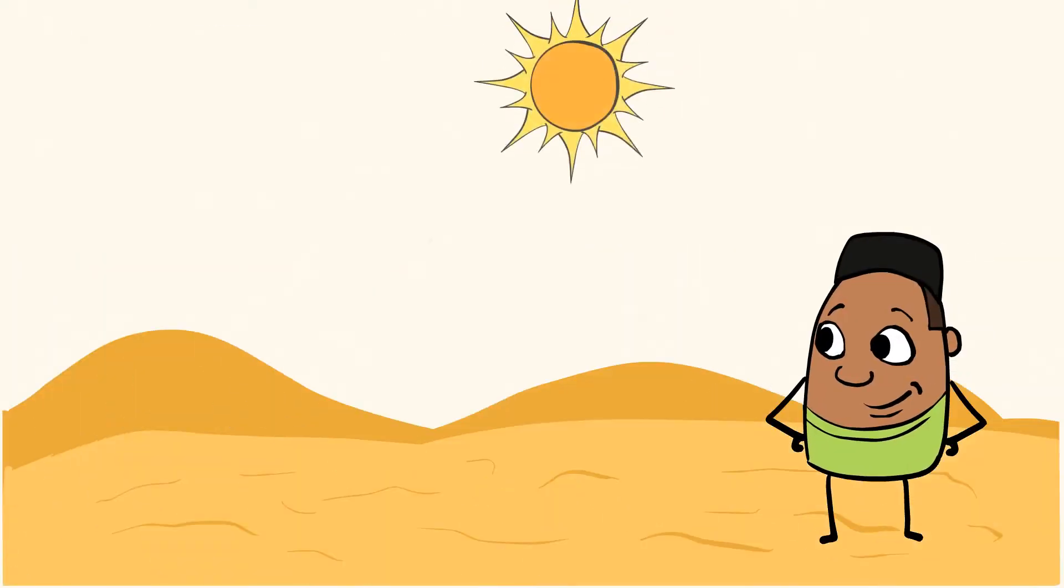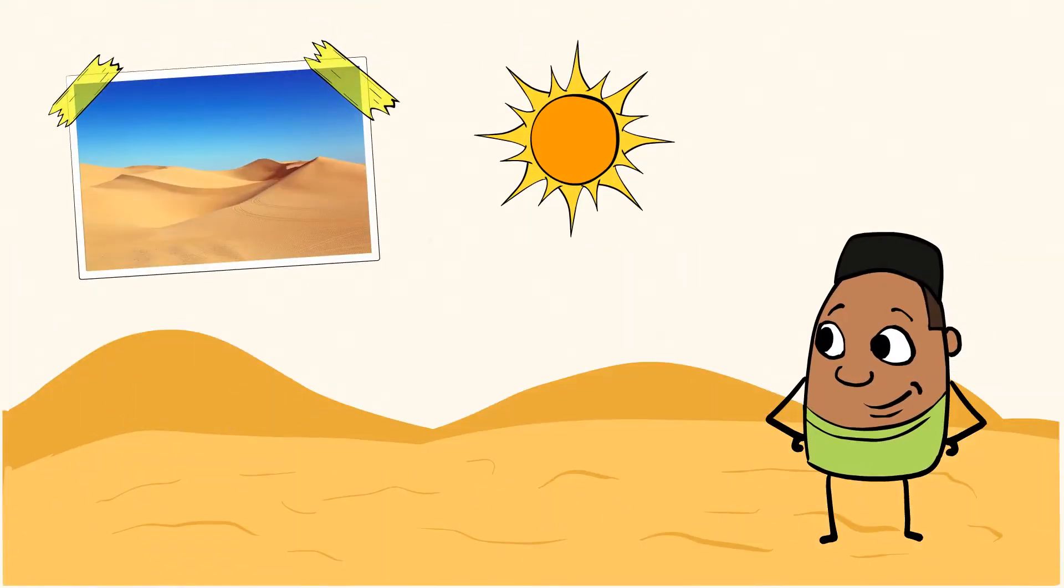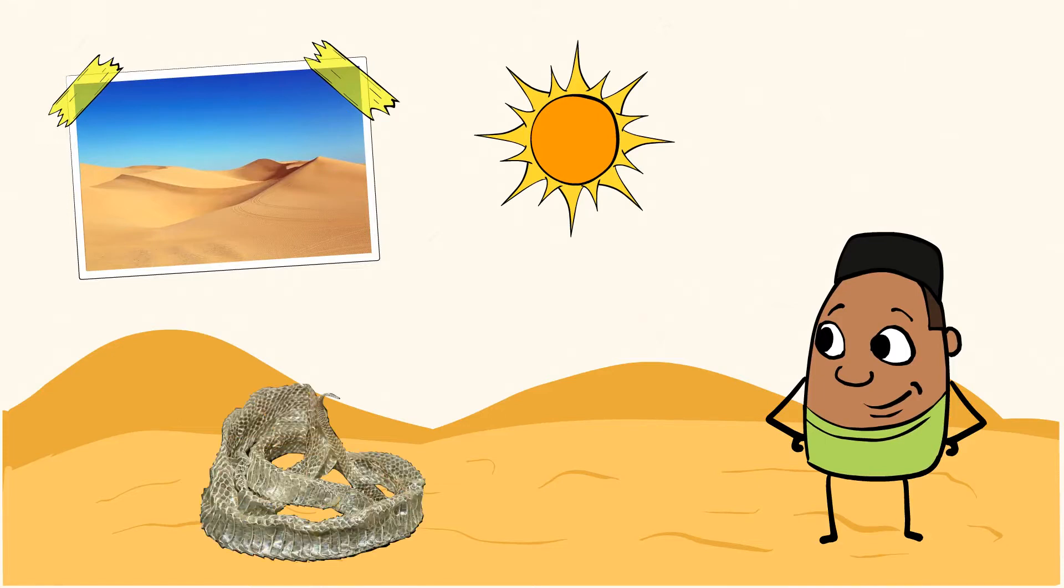Imagine you live in the desert, and it's summertime. And in the bright hot desert sun, you find something that looks like this. Wondering what that is? It's a snake skin. And if you're wondering why the skin is here and the snake is somewhere else, well, let me explain.